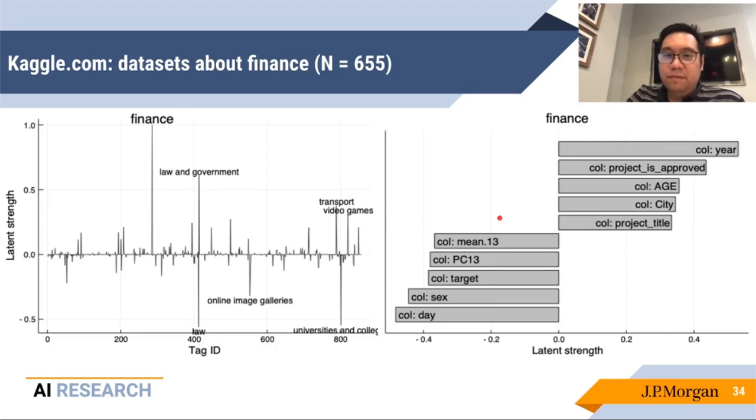Now we'll look at three particular topics that have come up. Here is a common label, which is finance, which occurs in 655 datasets. What we see here is the Y matrix from before, but now a visualization thereof. So we see here that the finance tag correlates positively with law and government, transport and video games for some reason, and it negatively correlates with law, online image galleries, and universities and colleges. On the right-hand side, we see that the presence of a column called year, a presence of the column called project is approved, and similarly for age, city, and project title, these are all positively correlated with the presence of the finance tag.